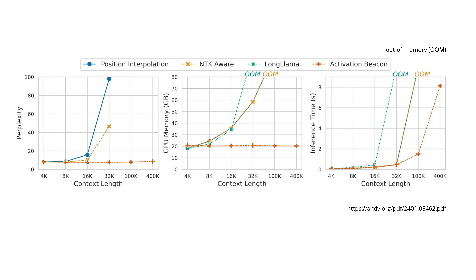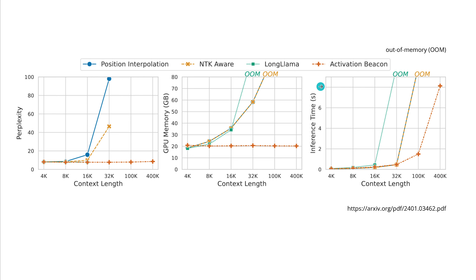Let us analyze the published results by this research group. We have context length vs. perplexity, context length vs. GPU memory, and context length vs. inference time. There are different possibilities to extend context length, but now we have the activation beacon. The authors show that perplexity stays the same where all other systems go crazy. GPU memory is absolutely the same from 4k to 400k context length, and even the inference time is quite okay — about eight seconds at 400k.